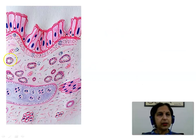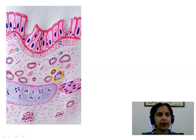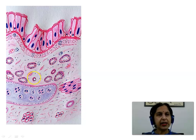Here we see the submucosa showing mucous acini as well as mucous acini with serous demilunes. We also see the ducts of these glands lined by simple cuboidal epithelium along with blood vessels and few lymphatic aggregations.